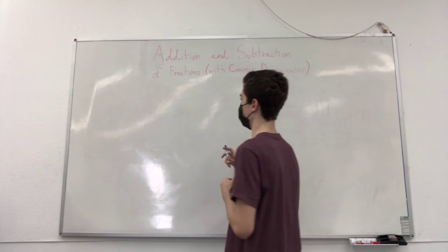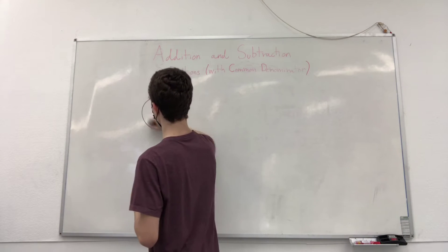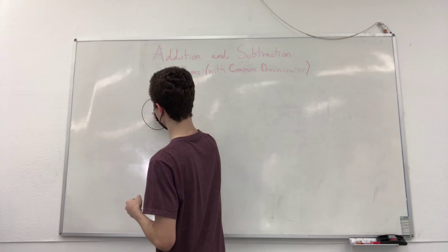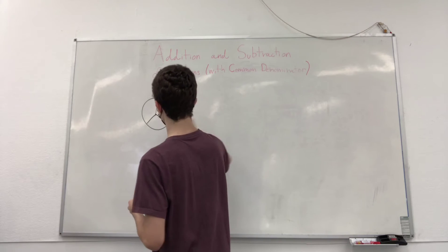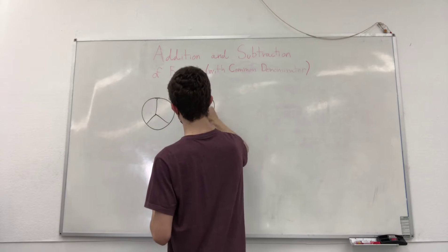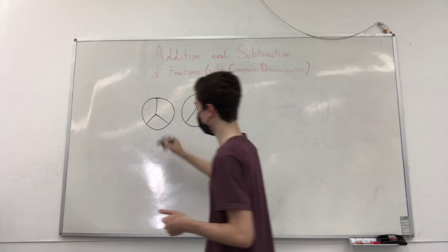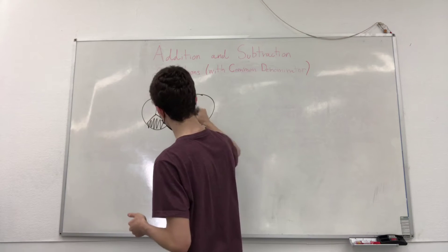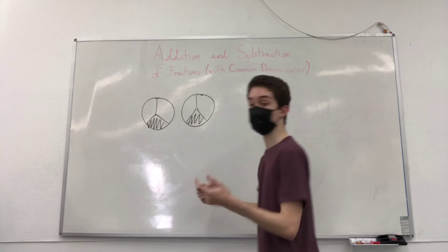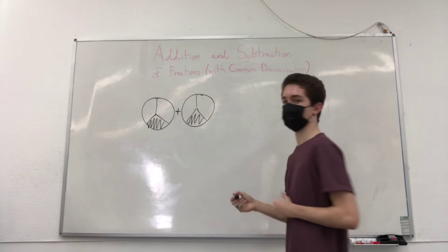Well, you can have, for example, one pizza that is split into three parts, another pizza that's split into three parts. And then you get one part of each pizza. We have one part from this pizza, one part from this pizza, and you want to add them together. What do you do?